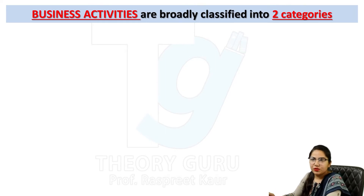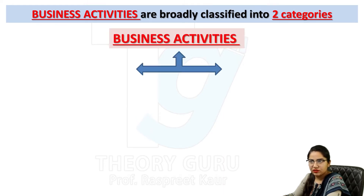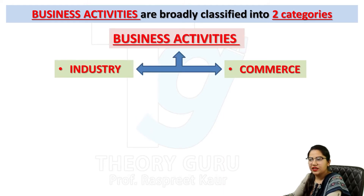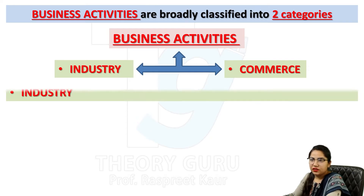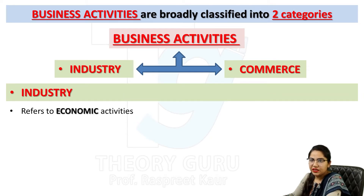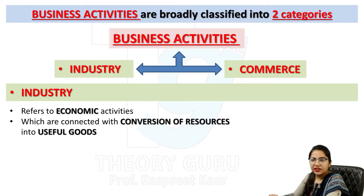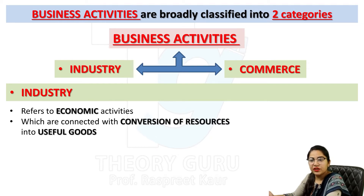Let us start with our topic. Business activities are basically divided into two categories: industry and commerce. So first of all, we will talk about industry. Industry refers to economic activities which are connected with conversion of resources into useful goods — where we convert resources into useful goods. The purpose of that is economic activity, meaning with a view to earn money, with a view to earn livelihood.